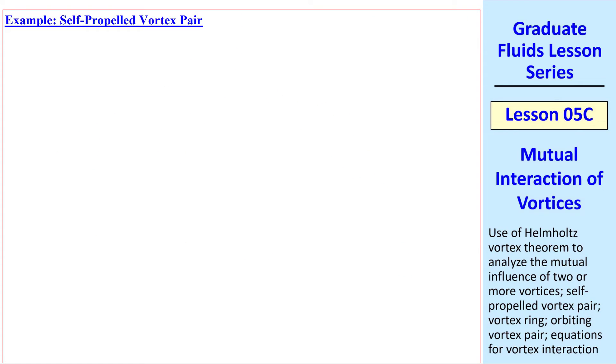Here's a simple example, a self-propelled vortex pair. We have two vortices of equal but opposite strength. Again, strength means circulation. Let's suppose these two vortices, A and B, have strengths gamma and negative gamma.